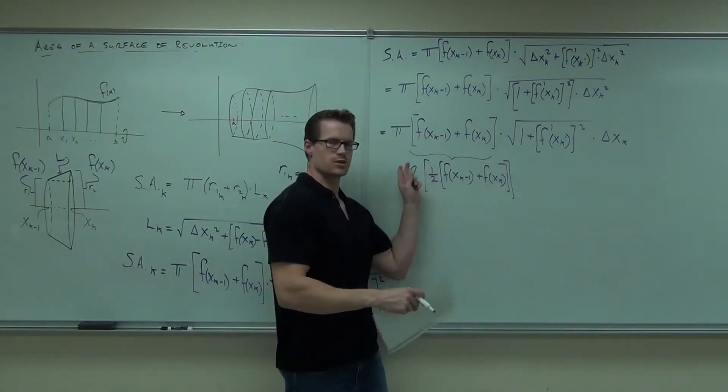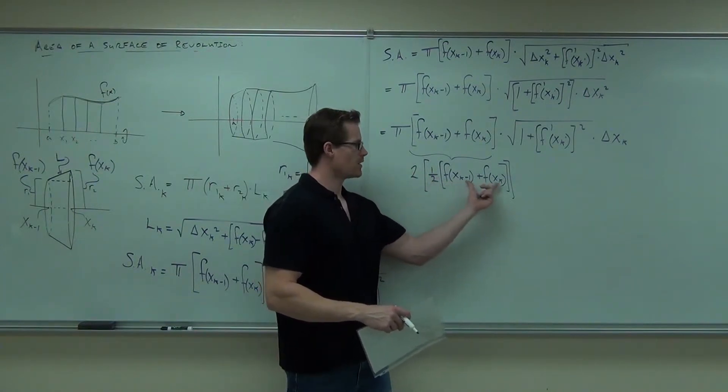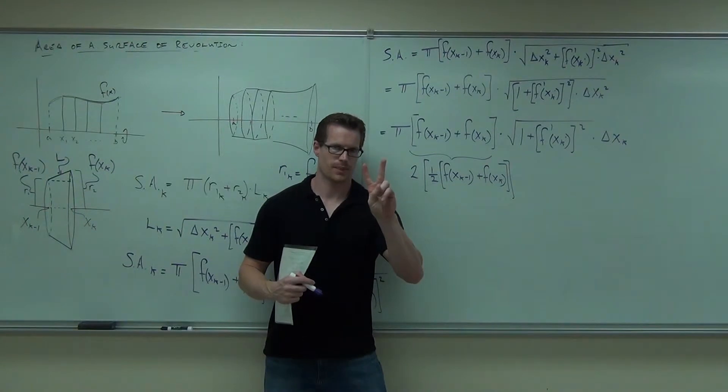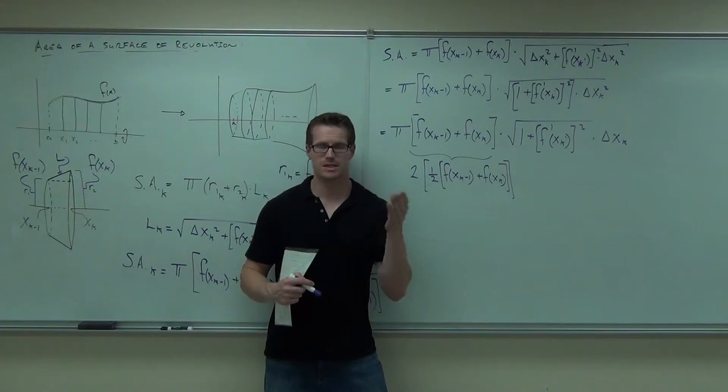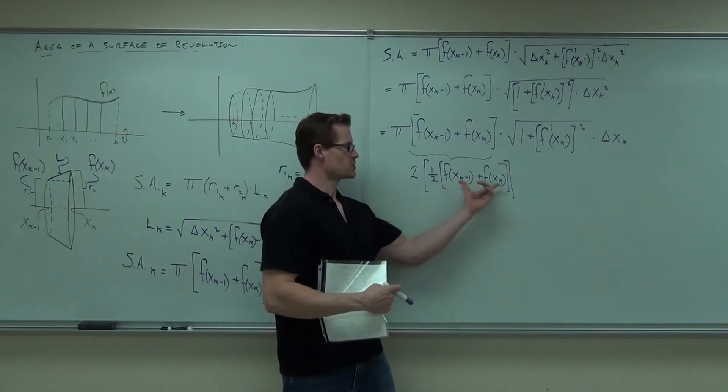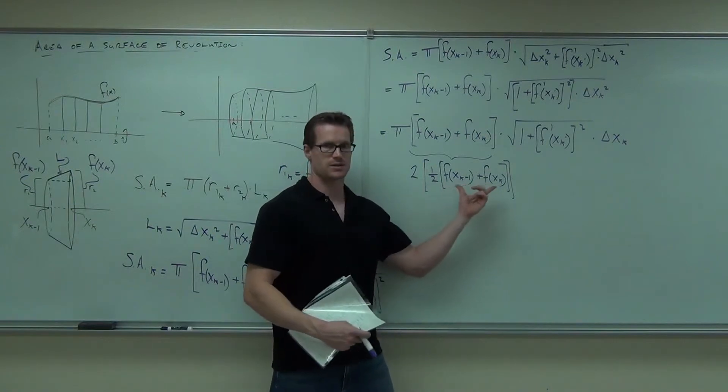Now, what is this? Ignore the 2. Look at the 1 half this. If you add two things together and divide by 2, you get the thing that's right in the middle of it. What you get is the average. So basically, what we're having here is the average of the heights.